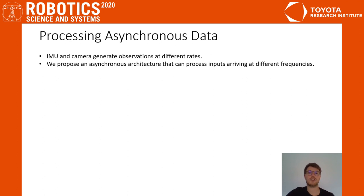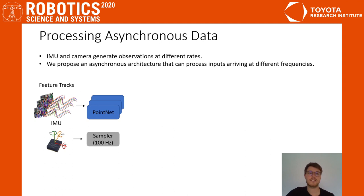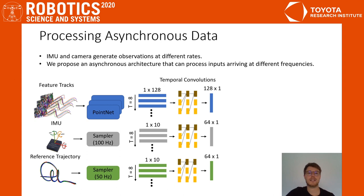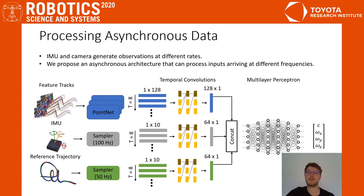One particular challenge of such an end-to-end approach is that sensor inputs can arrive at different rates. To cope with this, we propose an asynchronous architecture that can process inputs arriving at different frequencies. Concretely, we feed the following features to the neural network: feature tracks given by a visual front-end, integrated and debiased IMU readings, and a reference trajectory. We keep a history of each input stream. At a constant frequency, we take the newest batch of each stream and encode it using temporal convolutions. Concatenating the encodings and feeding them through a standard MLP produces the control command in the form of collective thrust and body rates.